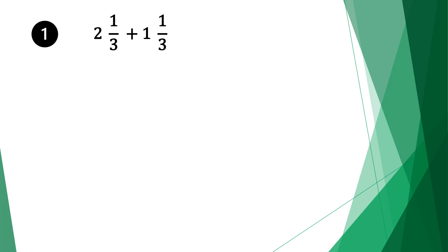Let's start with question one. We have a mixed fraction of 2 and 1 third plus 1 and 1 third. The first thing we do with mixed fractions is convert them into normal fractions.